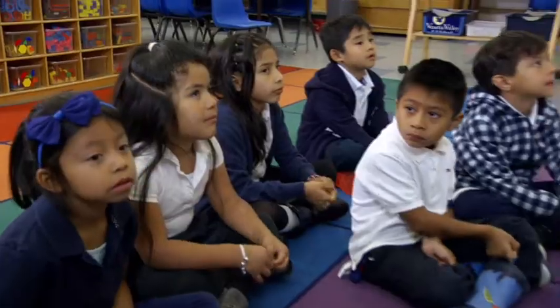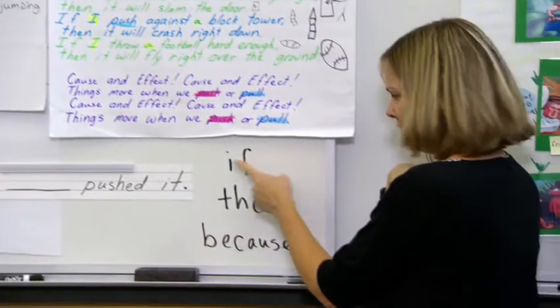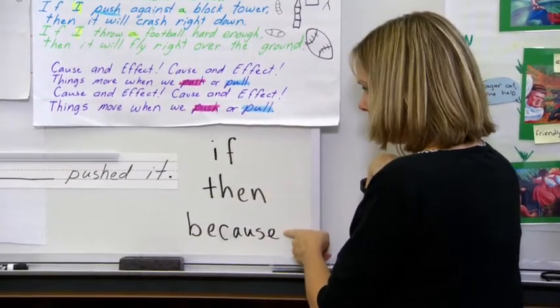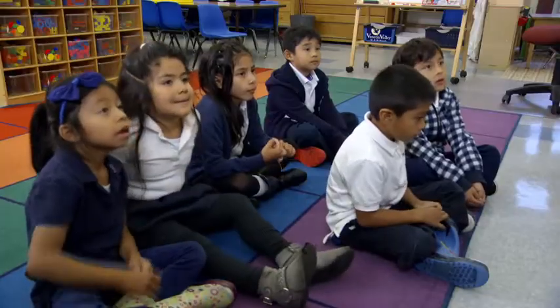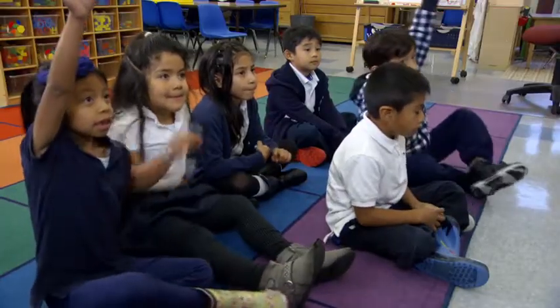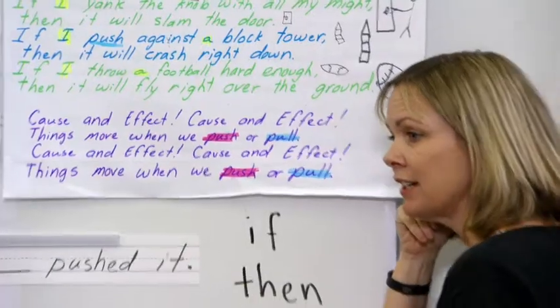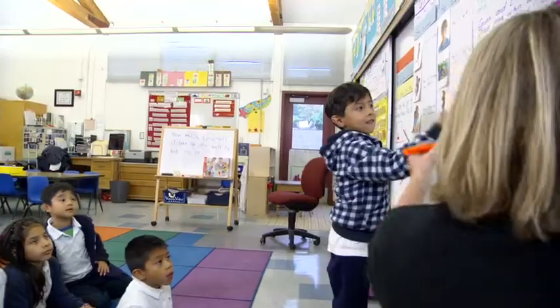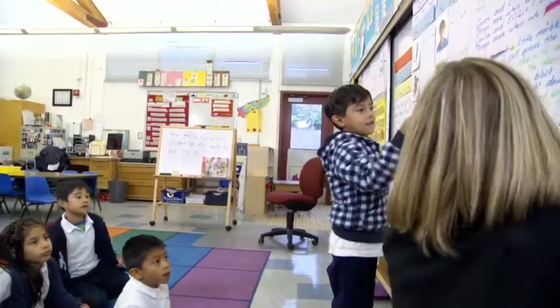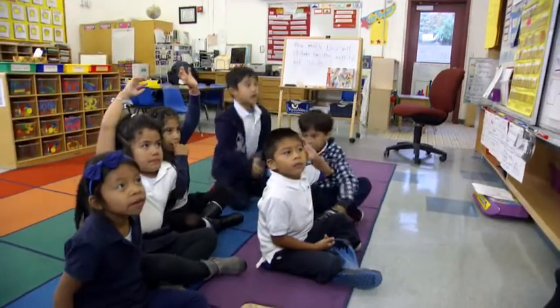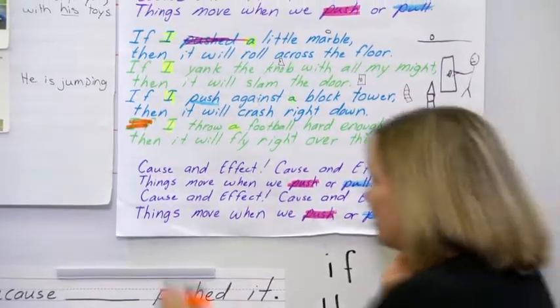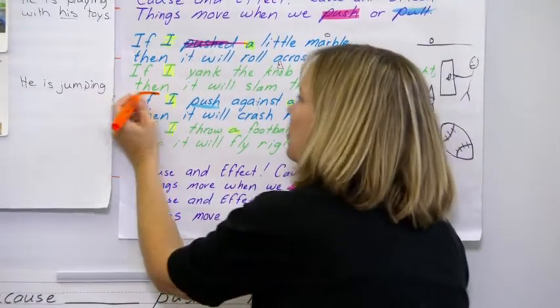So we're looking for these three words: if, then, and because. We're going to look in this song — if you see one of those words, raise your hand. If. Everybody say if. Two ifs — okay, I'm just going to do that one. Then. Everybody say then. How do you spell then? T-H... So this is her chance to really drill how English works and to give them some practice with language.